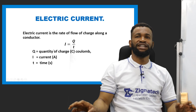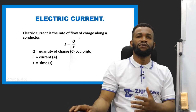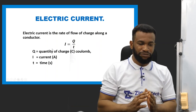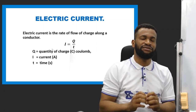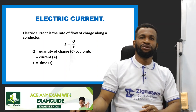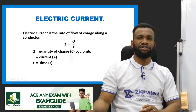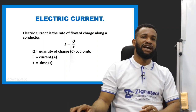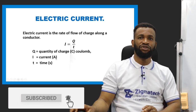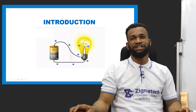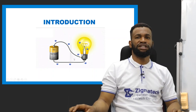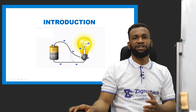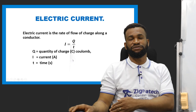When we talk about electric current, we are talking about the rate of flow of charge along a conductor. That is the quantity of charge flowing past a given point in one second is what current is about. Q represents the quantity of charge measured in coulombs, T represents time, and current is represented as I and measured in amperes. The rate — the speed at which the charges are moving past a given point in a closed circuit or in a conductor — that is what we mean by electric current.